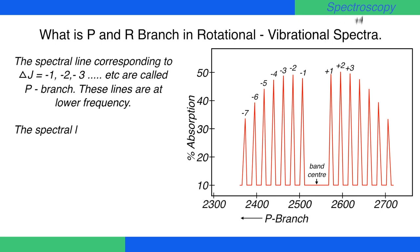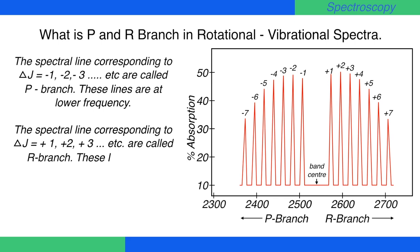The spectral lines corresponding to delta J equals plus 1, plus 2, plus 3, etc., are called R branch. These lines are at higher frequency.